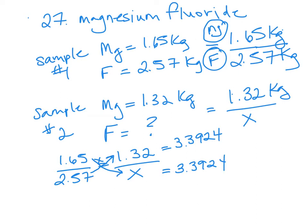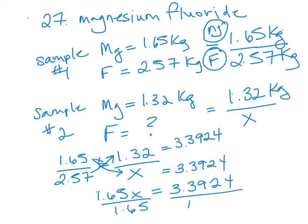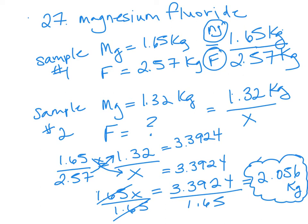I'm going to keep all my decimals and round off at the end. So 2.57 times 1.32 equals 3.3924. Then what I'm going to do is multiply 1.65 times X, which should also equal 3.3924. So algebraically, 1.65 times X is equal to 3.3924. Dividing both sides by 1.65 gives us X equal to 3.3924 divided by 1.65, which equals 2.056 kilograms — that is the mass of the fluorine in sample 2.